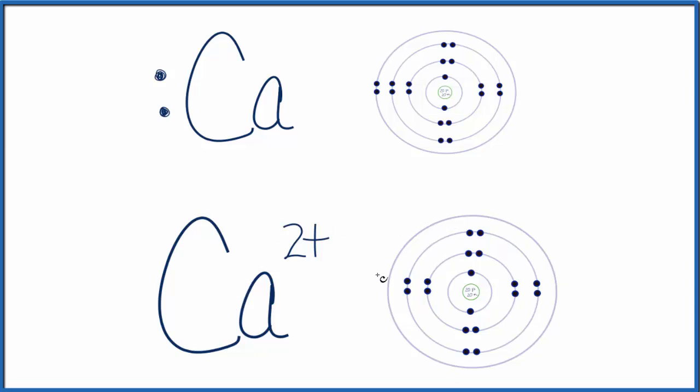Let's get rid of this outer shell, since there's nothing in it. And you'll notice that once we've lost these two valence electrons, underneath we have a full outer shell. We have an octet, and that's very stable. So that's why calcium will lose these two valence electrons, in order to have this full outer shell and be stable.